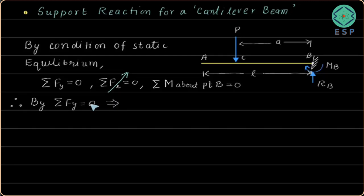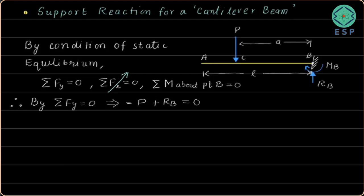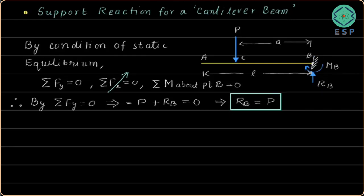We have no force in the horizontal direction, so that condition is ruled out. By the condition of summation of forces in the vertical direction equal to zero: the point load P acts downward (negative), and RB acts upward (positive), giving minus P plus RB equals zero. Therefore RB equals P. This is equation one.